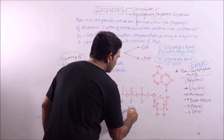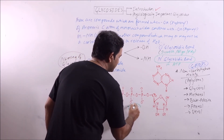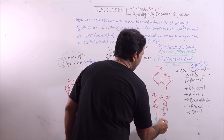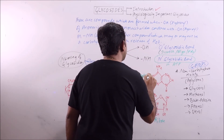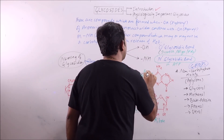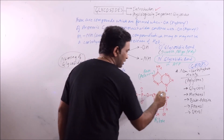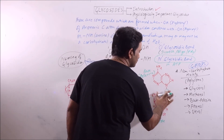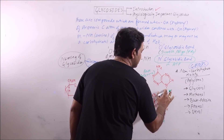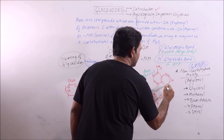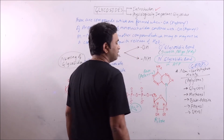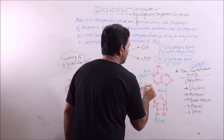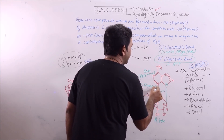For the N-glycosidic bond example: here three phosphates are present, this is ribose, and this is the nitrogenous base adenine. If interaction occurs with release of H2O, then this bond will be termed as an N-glycosidic bond.